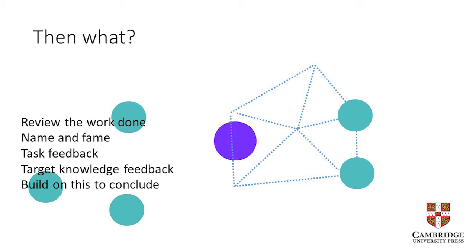Review the work done when students return — without having nine people all reporting on their pair work, which by the second person is generally pretty painful. Name and fame good contributions. Task feedback and target knowledge feedback are potentially separate things: task feedback covers how they negotiated and worked together, while target knowledge feedback addresses the quality of the ideas themselves — what was excellent, what needs work, what to leave out.